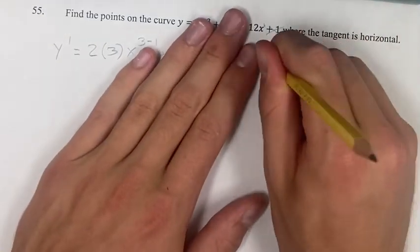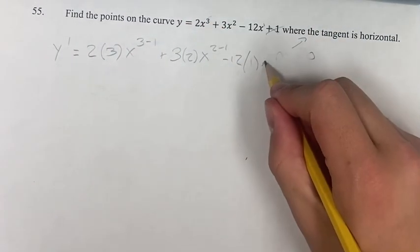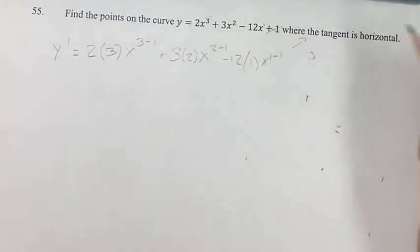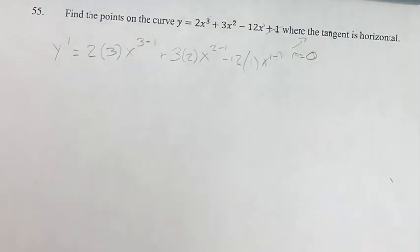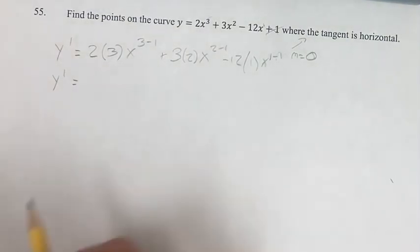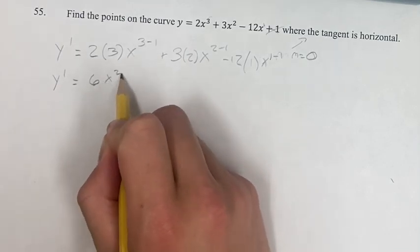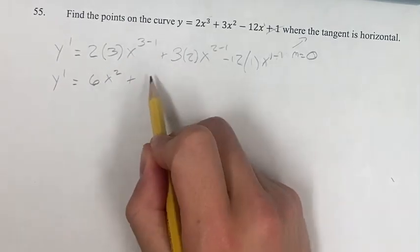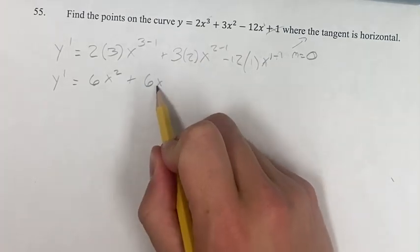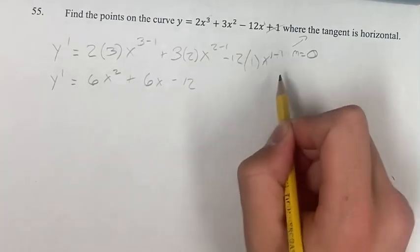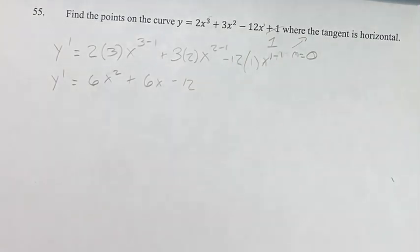Let me make a little bit of room there. The coefficient here is 1, so it's just 1 minus 1. Now this is something we can simplify. We have y prime equals 2 times 3 is 6, x to the 3 minus 1 is x squared, plus 3 times 2 is 6x, minus 12 times x to the 0. X to the 0 is just 1, so this is 12 times 1, which is just 12.